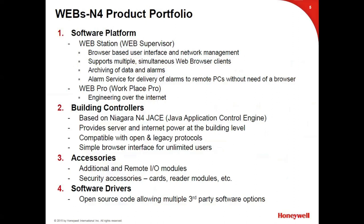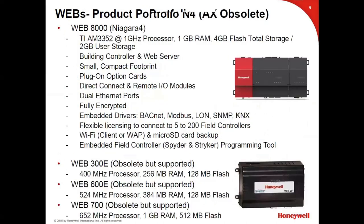Like with other JACEs, you can add I/O modules to the Web 8000 JACE. Third-party drivers can be added as well. We have an open NICS statement, meaning anyone's workbench will work on our Webs JACE. The Web 8000 uses a typical processor with available RAM, and it's fully encrypted. When you use FoxS protocol, that is an encrypted protocol. BACnet IP, by contrast, is not an encrypted protocol — that's a point we like to make. The drivers embedded in the JACE include BACnet, Modbus, LON, SNMP, and KNX.